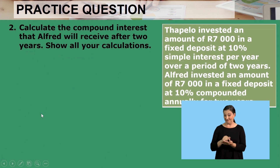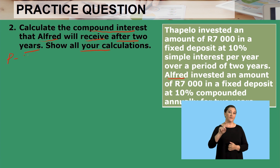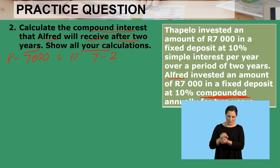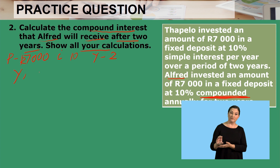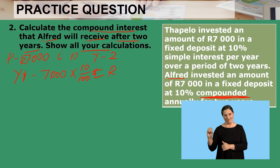Now we move to question two: calculate the compounded interest that Alfred will receive after two years. The principal amount is 7,000, the interest rate is 10%, and the number of years is two. For compound interest, the interest has to be added into the principal amount. Year one: 7,000 multiplied by 10 over 100 equals 700.